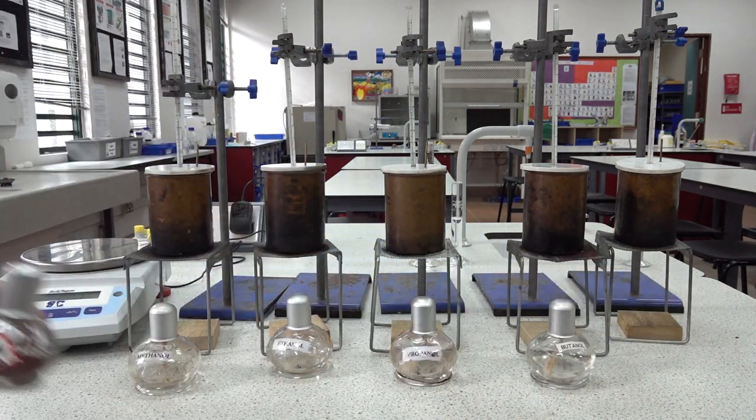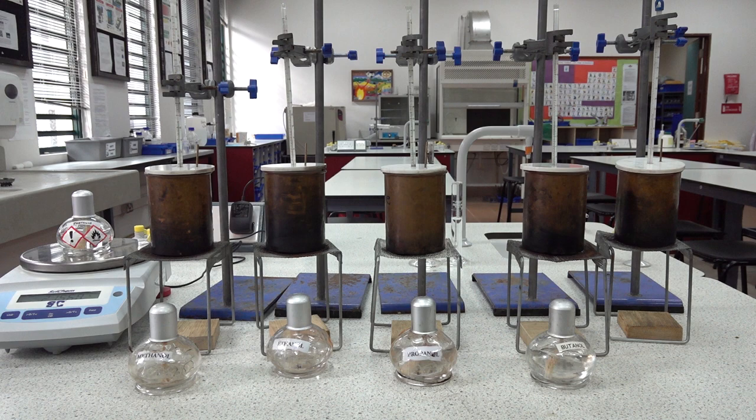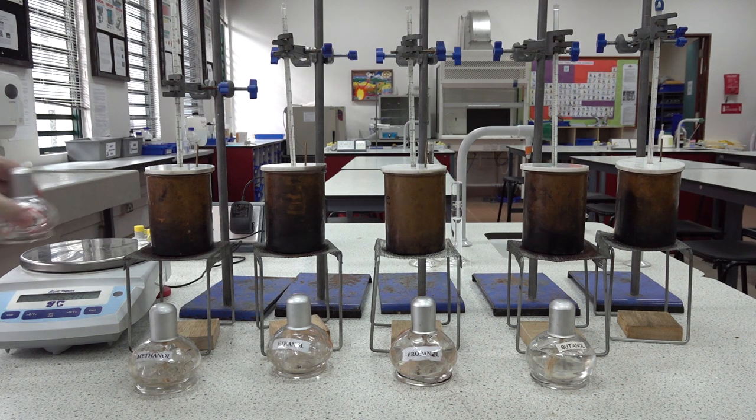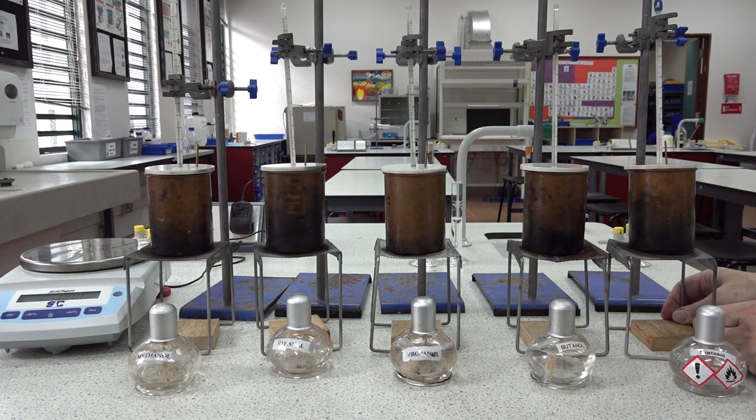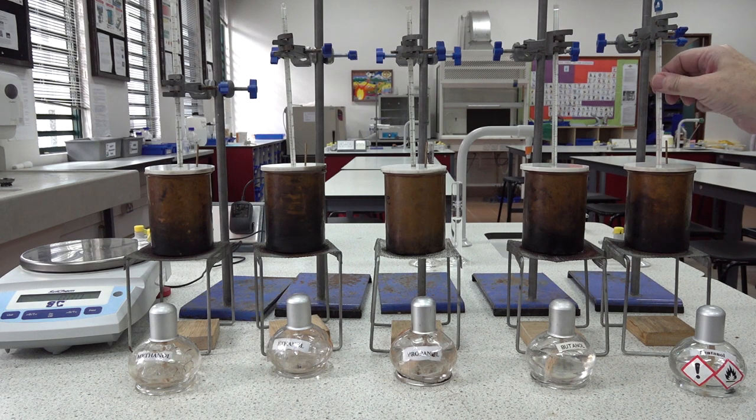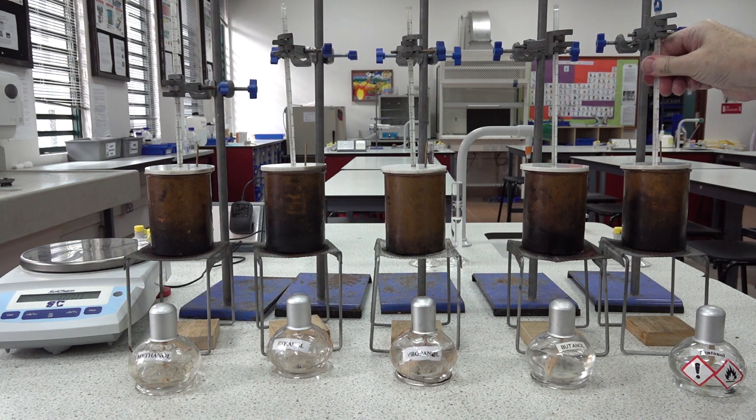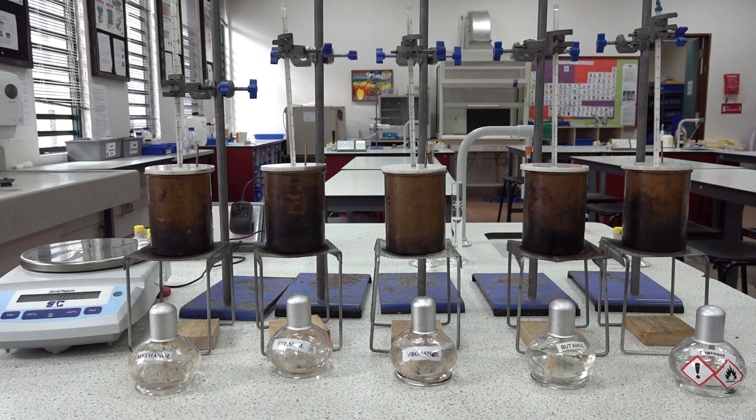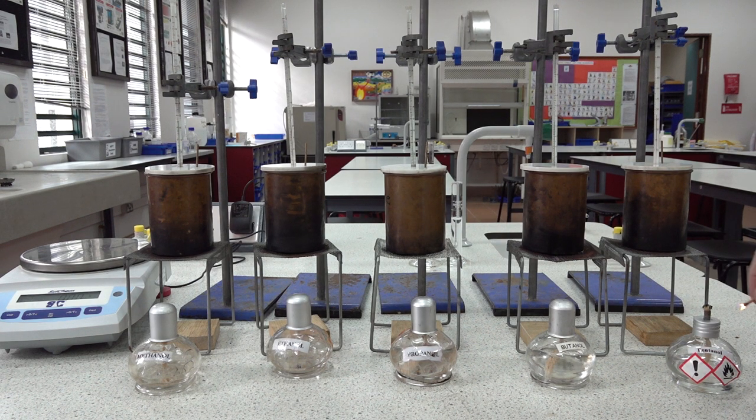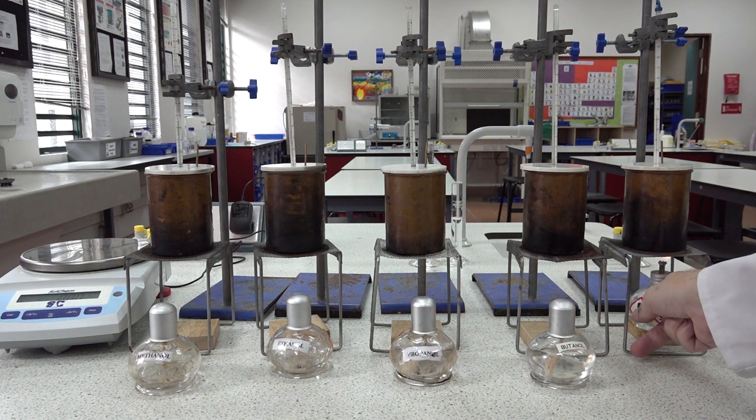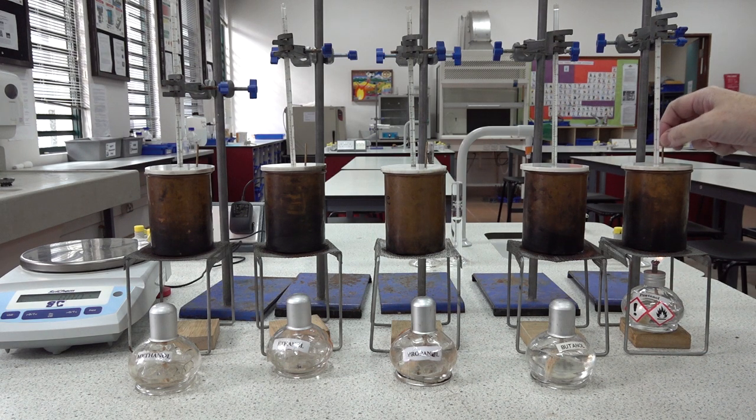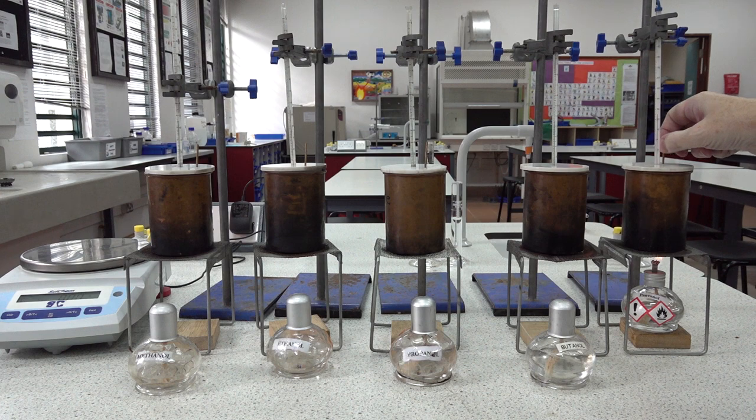On to the next one, the pentanol. Pentanol mass reading at the start: 215.68 grams. Let's move this a little bit closer, as we've been knocked out of position by my hand. Temperature at the start is 25. Just like the burners we've done before, place it underneath the calorimeter there and start stirring. We're starting at 25.